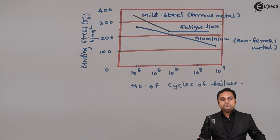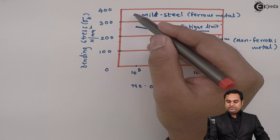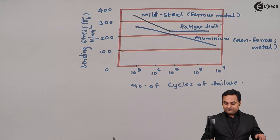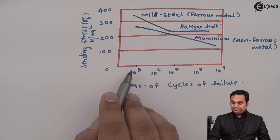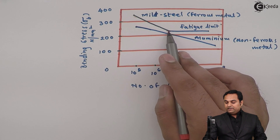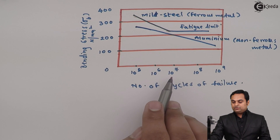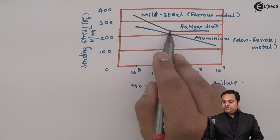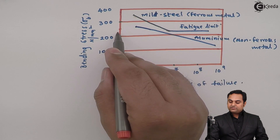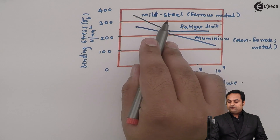In the SN curve, for mild steel, if we are operating at a higher amount of stress then it will last for fewer cycles — the number of cycles of failure is less. If we go on decreasing the stress for mild steel, there comes a point between 10 to the power 6 and 10 to the power 7 cycles where the stress becomes constant — that is the fatigue limit. This means the material, when it has reached a particular stress level, can go for an infinite number of cycles. That is for ferrous metals.